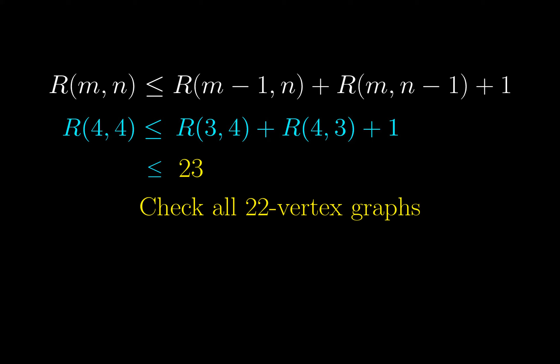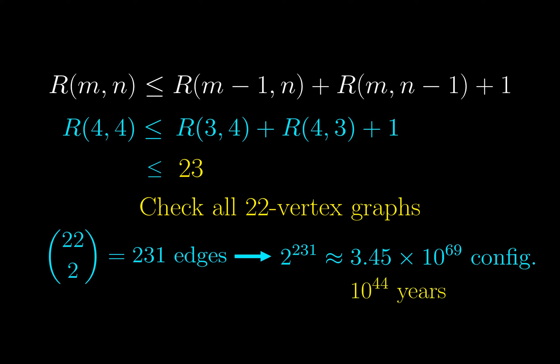If we really want to hunt for the exact value of R(4,4), what we might do is ask the computer to check all the 22 vertex graphs. There are altogether 231 edges in the 22 vertex graph, and each edge can be colored red or green. So there are altogether 2 to the power of 231 configurations. This is a huge number. Even if we assume that a supercomputer can check 1 quintillion graphs a second, it needs 10 to the power of 44 years to check all the 22 vertex graphs. Although it turns out that R(4,4) is actually 18, please bear in mind that it is nearly impossible to brute force this answer without clever proofs like the following.